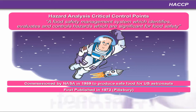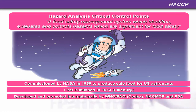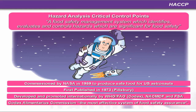HACCP was first published in 1973 by the Pillsbury Corporation. It was then developed and promoted internationally by the World Health Organization, the FAO (Food and Agricultural Organization of the United Nations), the NACMCF (National Advisory Committee on Microbiological Criteria for Food), and the Food Standards Agency. The Codex Alimentarius Commission stated it is the most effective system of food safety assurance. The Codex Alimentarius Commission was established by the WHO and FAO and consists of government officials from every country throughout the world.